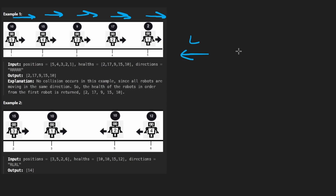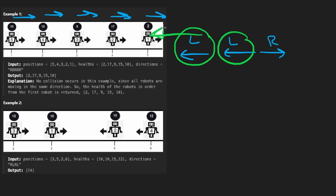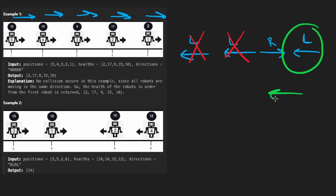Now let's consider the opposite case. A robot moving to the left — that's fine. Another robot moving to the left — also fine. Now if I had a robot moving to the right, that's also fine. But if I have a robot moving to the left and the previous robot was moving to the right, that's where there is a collision. So if we get a robot moving to the left and the previous robot was moving to the right, that's a collision.